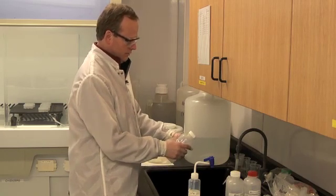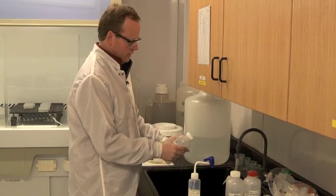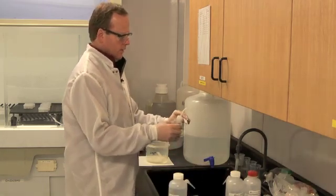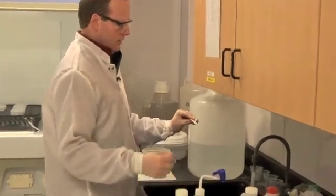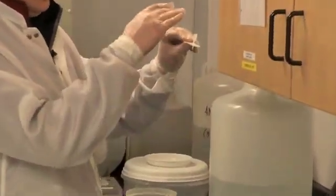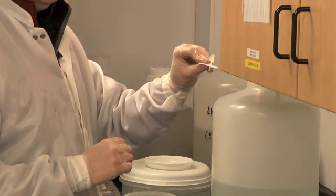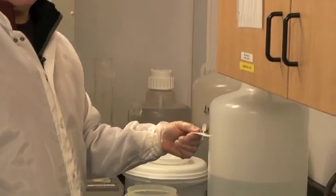After we've rinsed the column, we're going to fill the stem with water and then slurry a small amount of our ion exchange resin into the reservoir. That resin will settle down into the narrow column portion and we're going to set it on a stand over here under the hood for further cleaning.